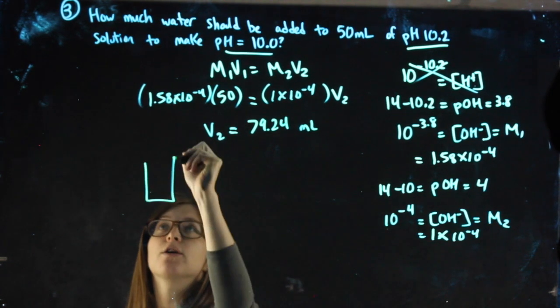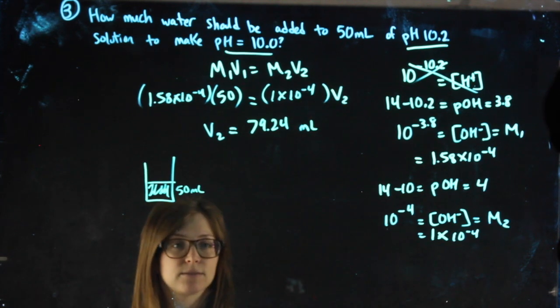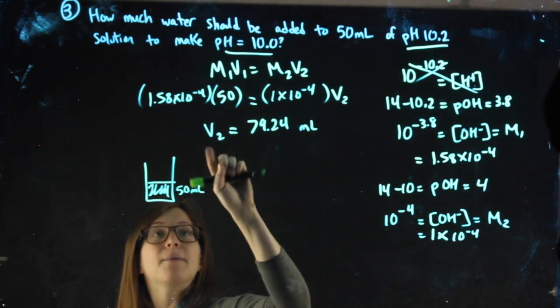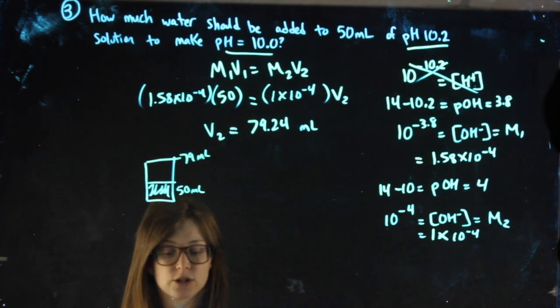Realize I started with 50 milliliters of something, pH 10.2. I'm ending, V2 represents the end, I am ending with 79 milliliters.